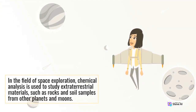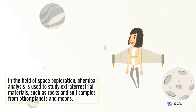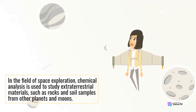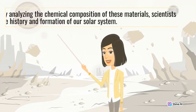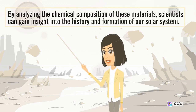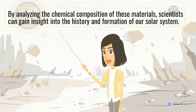In the field of space exploration, chemical analysis is used to study extraterrestrial materials, such as rocks and soil samples from other planets and moons. By analyzing the chemical composition of these materials, scientists can gain insight into the history and formation of our solar system.